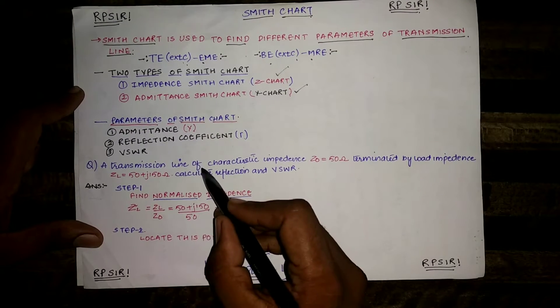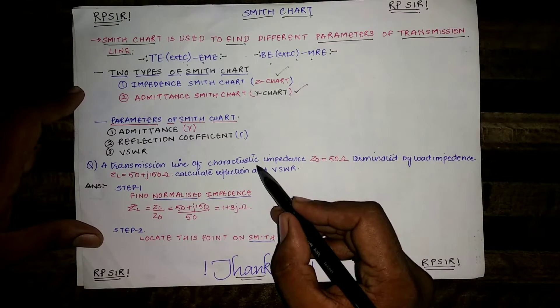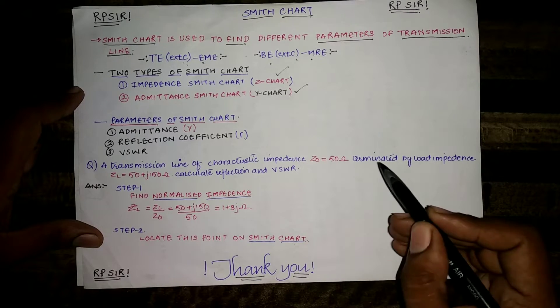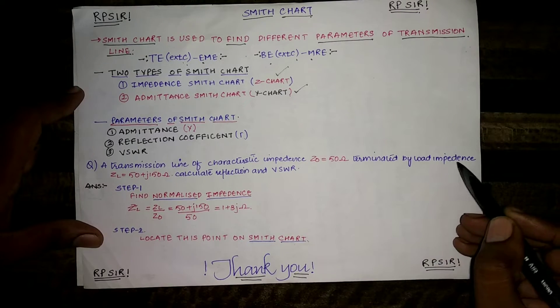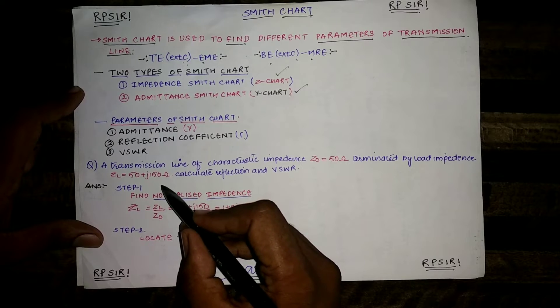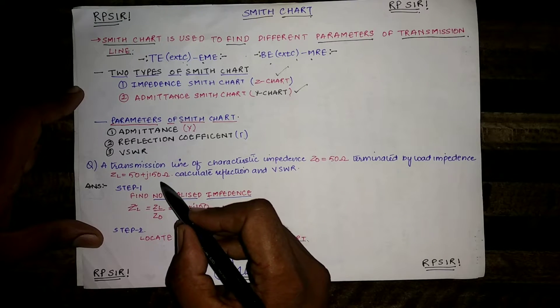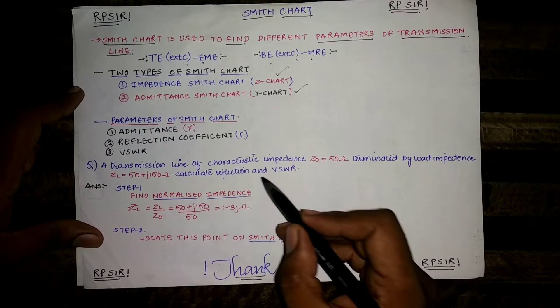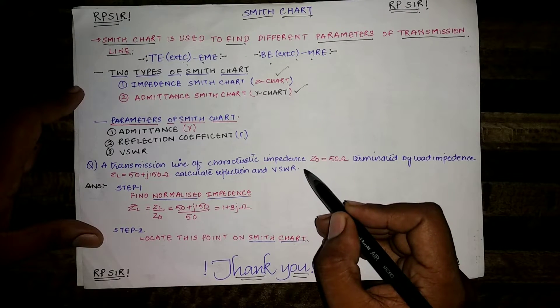A transmission line of characteristic impedance Z0 equal to 50 ohm terminated by load impedance of ZL equals to 50 plus J 150 ohm. Calculate reflection coefficient and VSWR.